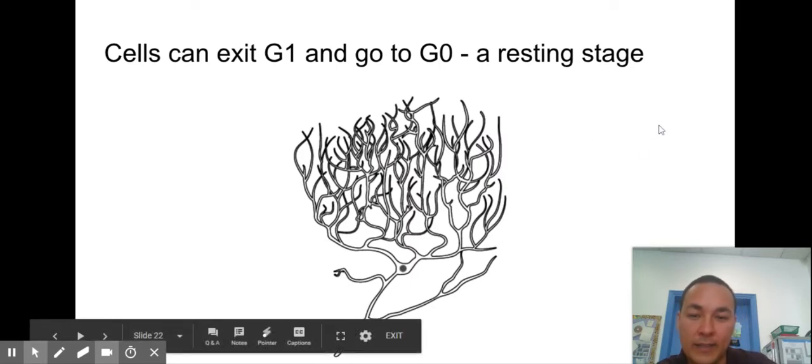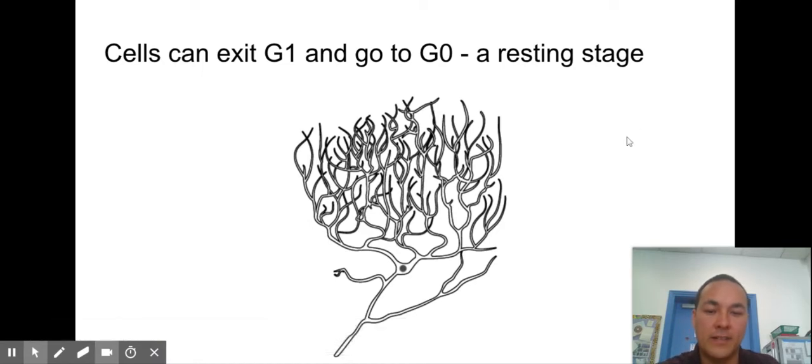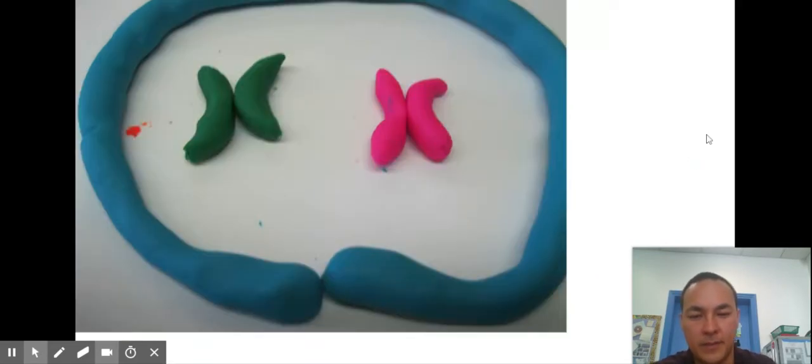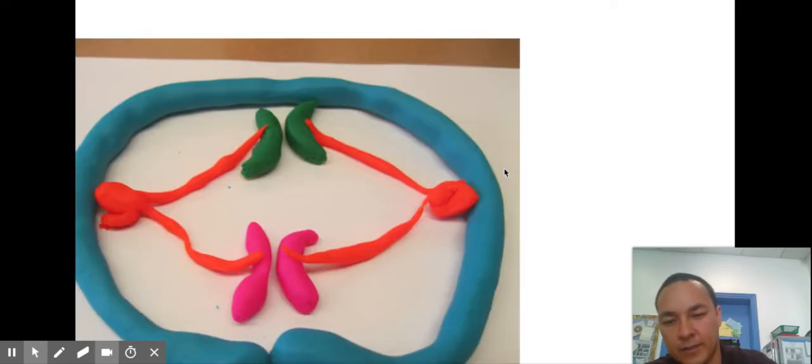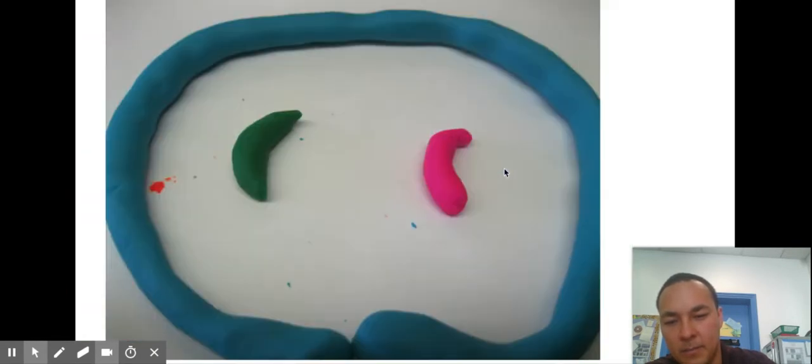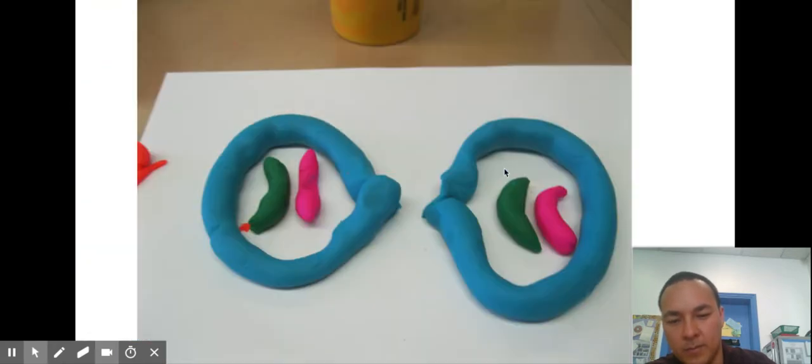Cells don't always have to divide. They can exit and they go to what's called gap zero, a resting stage. So this would be an example of a brain cell that has exited cellular division. Alright, I'm going to take you real quick through some of the Play-Doh models we made. So here, this would be the homologous pairs. So here's the homologous pair of chromosomes. Here they are chromatids. So this would be 2n is equal to 2. And so here are the two chromosomes. Here they are, the centrioles get them, they start to pull them apart, and bam. And each cell is like the parent one, just a little smaller. So it's going to need to grow.